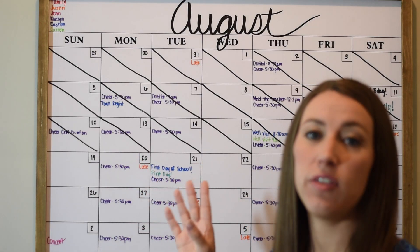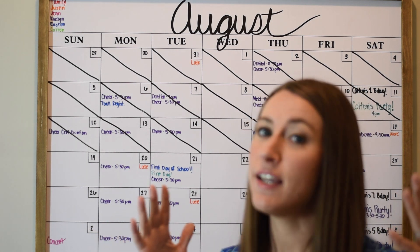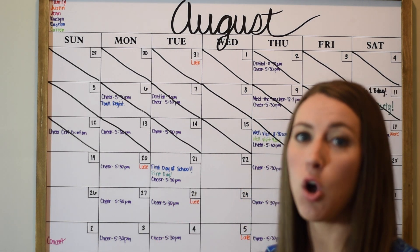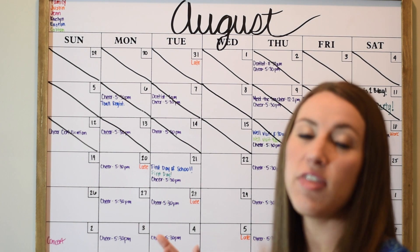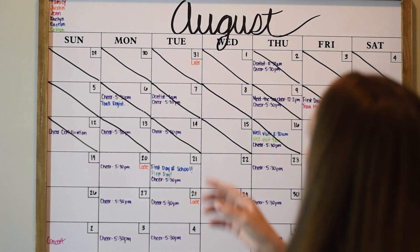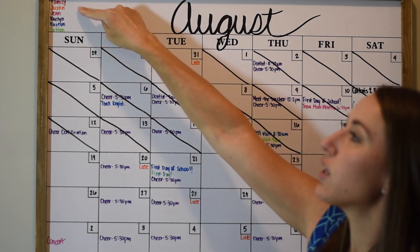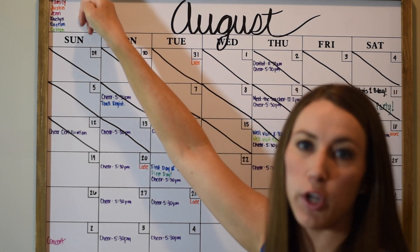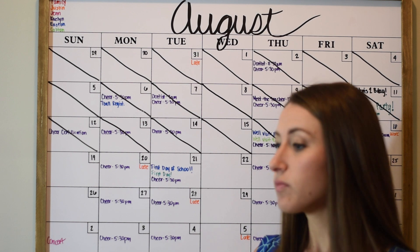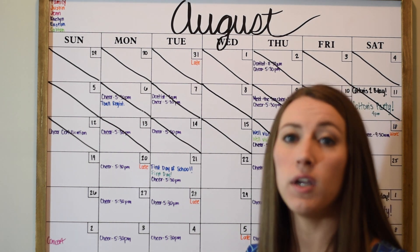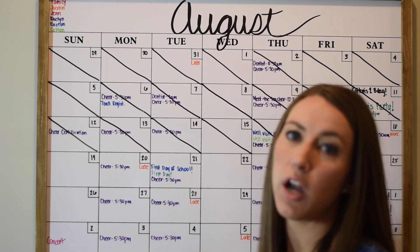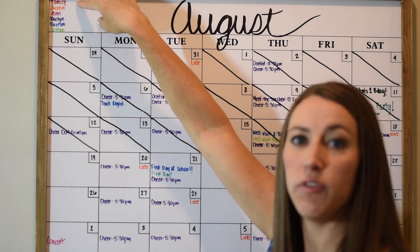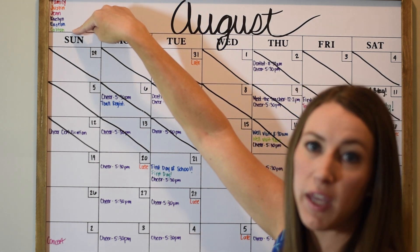Here we have the calendar, which is the main aspect of our Family Command Center. I just have a dry erase board Command Center and it's all color coded — everything goes on there that the family needs to be aware of. I have the month up at the top and over here in the left corner is everyone's name in the family, color coded.